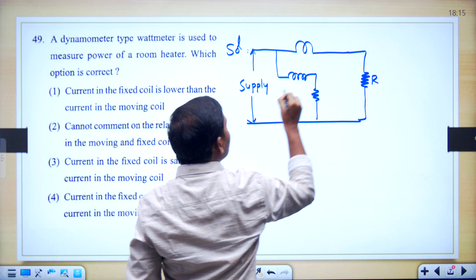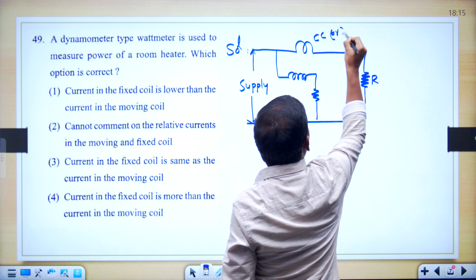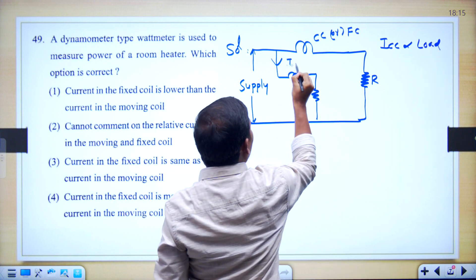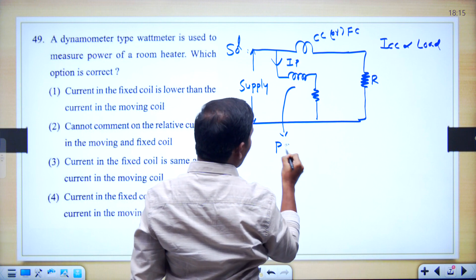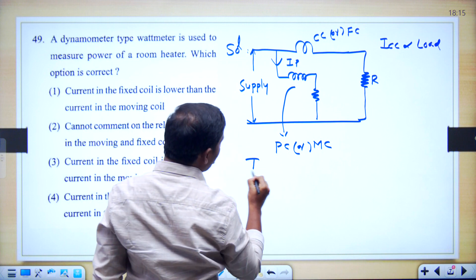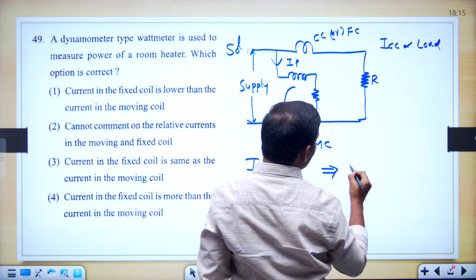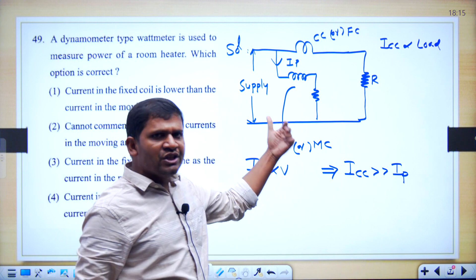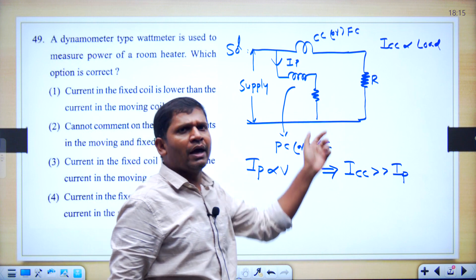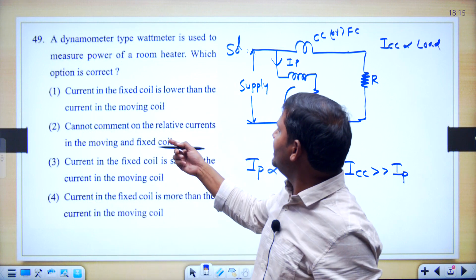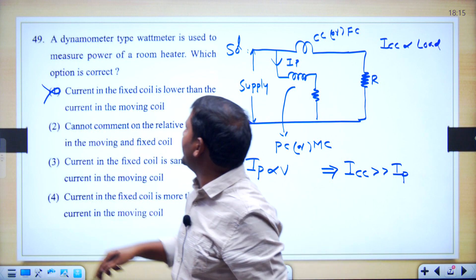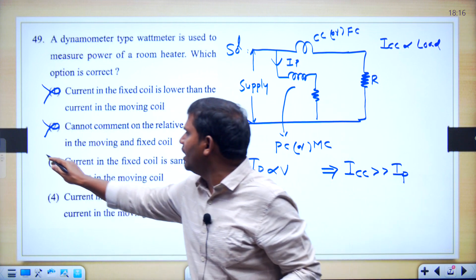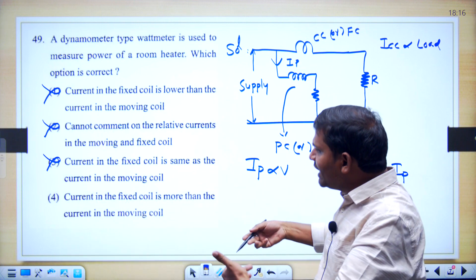Here we give the supply. The current coil or fixed coil — the current through the current coil is proportional to the load. The current through the pressure coil or moving coil is proportional to the voltage. The current coil current is always much greater than the pressure coil current — ideally the pressure coil current is zero. So the fixed coil current is greater.